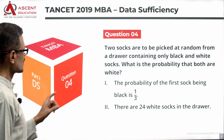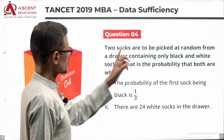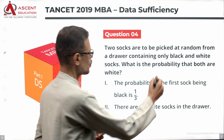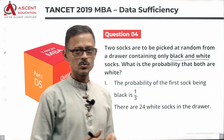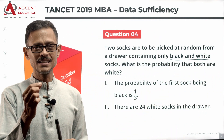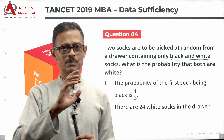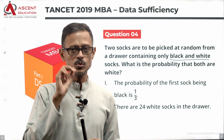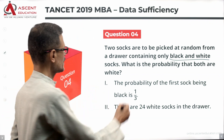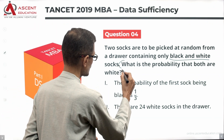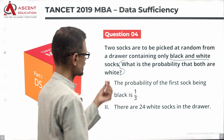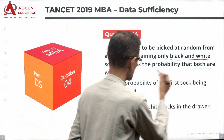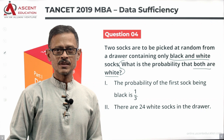Let's see what the question is. Two socks are to be picked at random from a drawer containing only black and white socks. We need to find out the probability — what is the probability that both of the socks that you picked up are white socks?